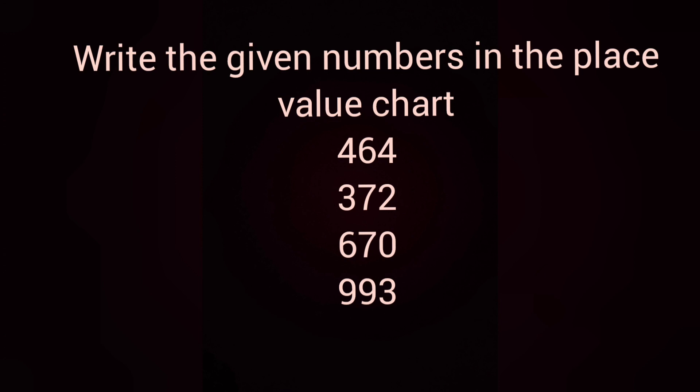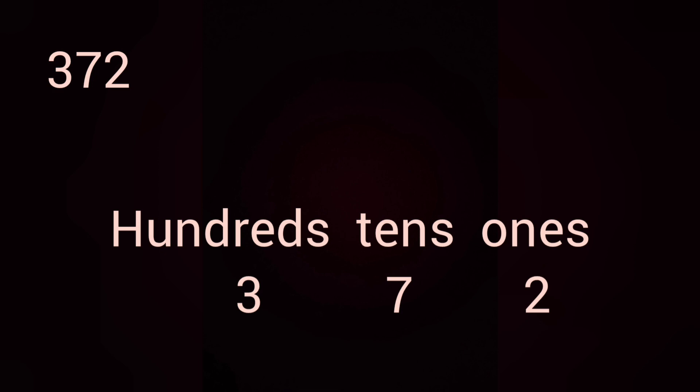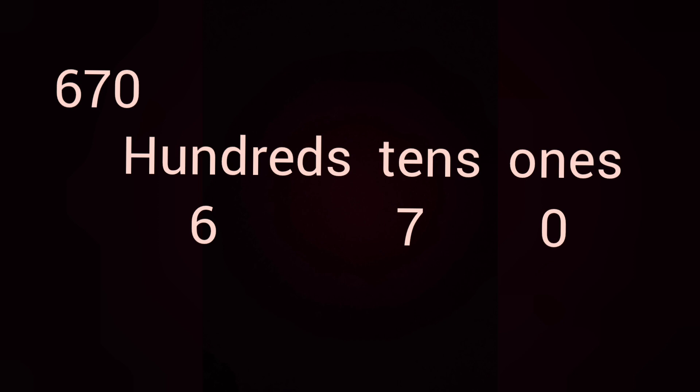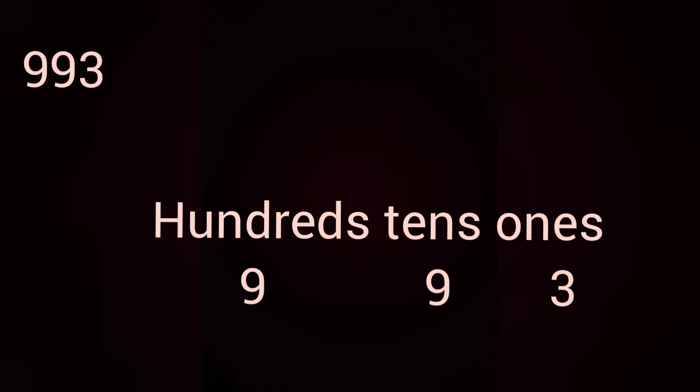Next, write the given numbers in the place value chart. For 464: 4 ones, 6 tens, 4 hundreds. For 372: 2 ones, 7 tens, 3 hundreds. For 670: 0 ones, 7 tens, 6 hundreds. For 993: 3 ones, 9 tens, 9 hundreds.